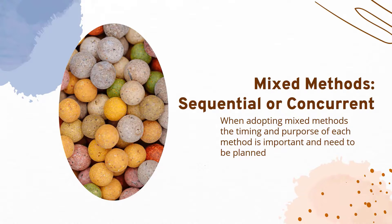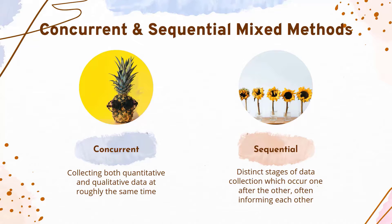If a researcher decides to utilise mixed methods, the next thing to think about is whether sequential or concurrent mixed methods will be used, and this needs to be planned ahead. Concurrent mixed methods involves collecting both quantitative and qualitative data at roughly the same time, and because these two sets of data are collected simultaneously, one will not inform the other. Sequential mixed methods involves distinct stages of data collection which occur one after the other, often informing the next stage.